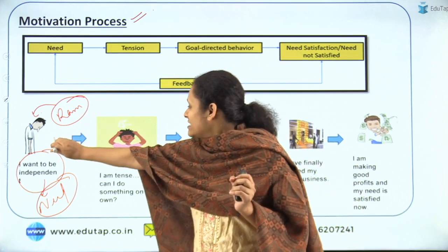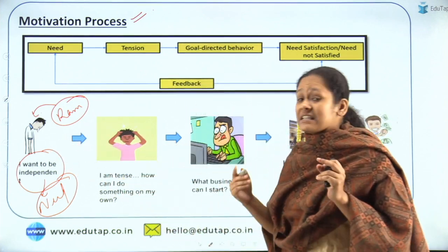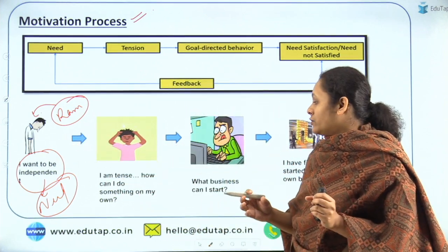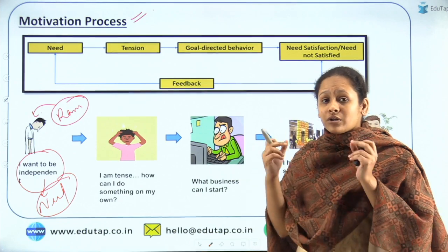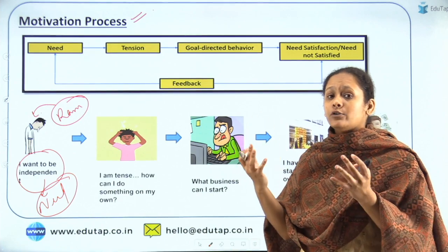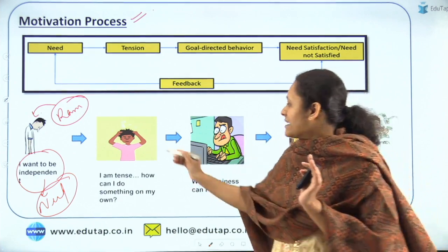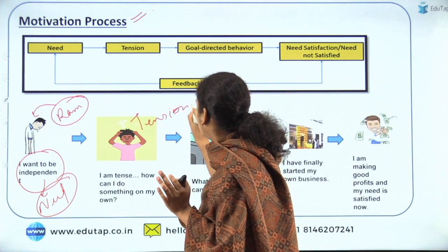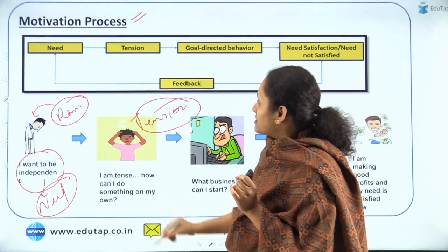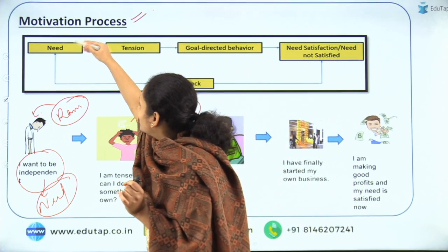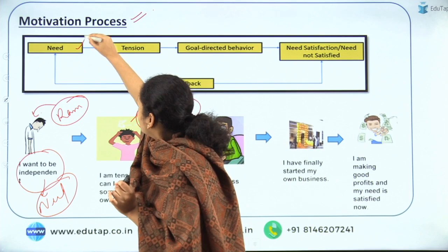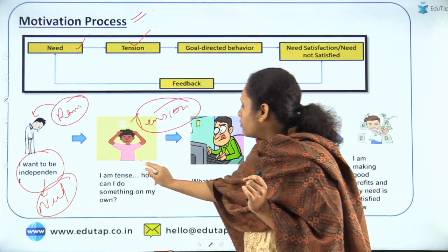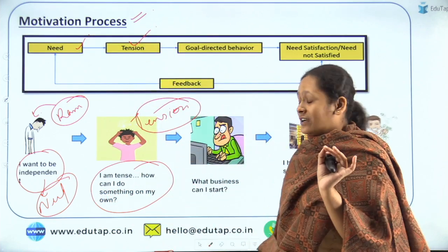Once he knows what his needs are, he starts brainstorming really hard and comes up with ideas about what he can do. This creates tension for Ram. Then there is the tension stage, which means he wants to know what he can do on his own.